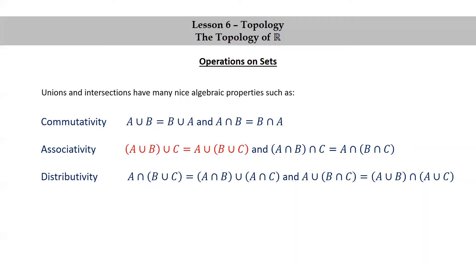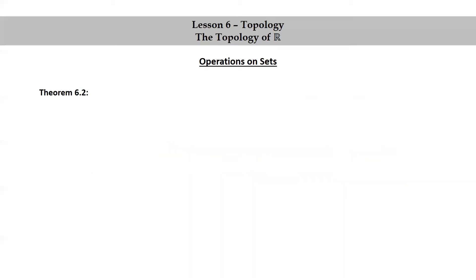And for the union distributing over the intersection, we have the union of A and (B intersect C) is equal to the intersection of (A union B) and (A union C).